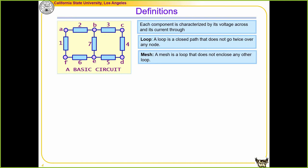Let's review the basic definitions. Each component in a circuit — whether a resistor, voltage source, current source, or dependent source — is characterized by the voltage across it and the current through it. A loop is a closed path that does not pass twice over any node. A mesh is a special loop that does not contain any other loops inside it. A loop that contains other loops is still a loop but is no longer a mesh.